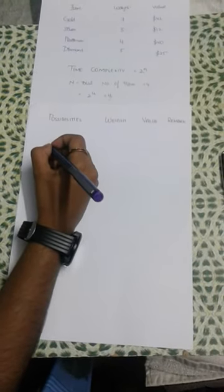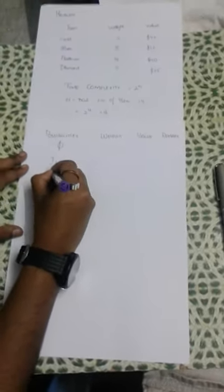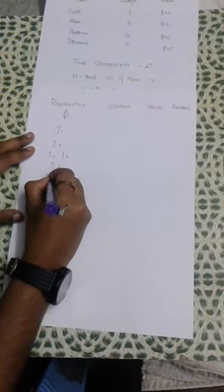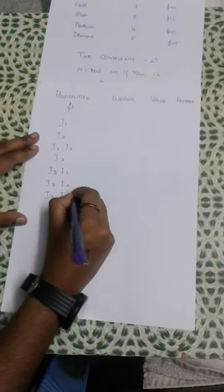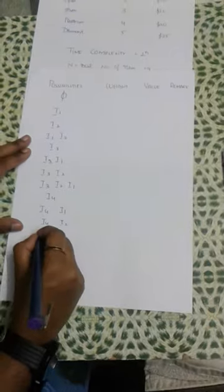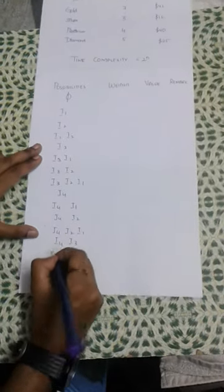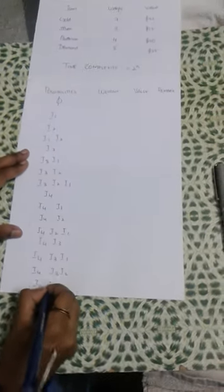With the help of binary form, we list the 16 possibilities. These include individual items i1, i2, i3, i4, combinations such as i1 and i2, i1 and i3, i1 and i4, i2 and i3, i2 and i4, i3 and i4, and further combinations up to the last 16th possibility which includes all four items i4, i3, i2, and i1.